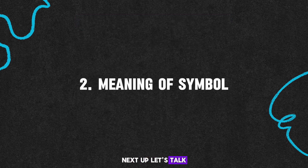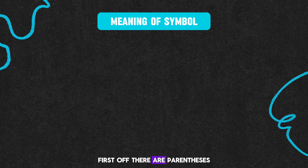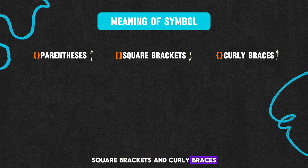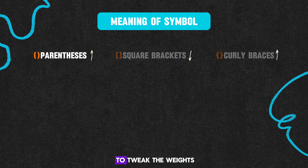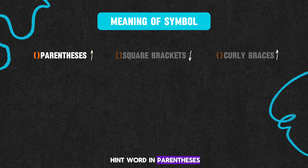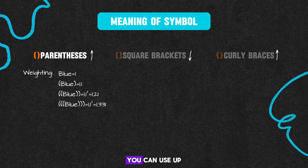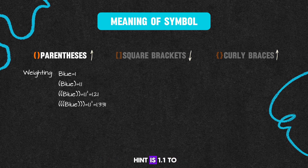Next up, let's talk about what each symbol means. First off, there are parentheses, square brackets, and curly braces. These are mainly used to tweak the weights of keywords. When you put a hint word in parentheses, its weight becomes 1.1. You can use up to 3 parentheses at the same time. When n parentheses are used, the weight of the hint is 1.1 to the power of n.